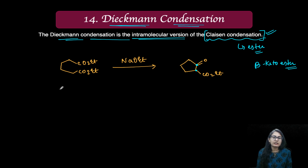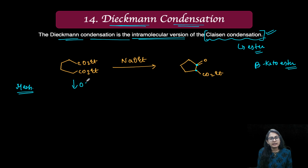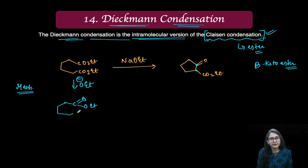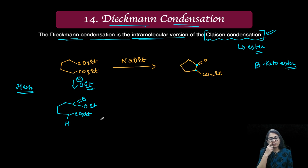Let's proceed and quickly see how the mechanism is going to be. If you have already drawn the mechanism for Claisen condensation, you would know that in the presence of this ester, the ethoxy group — what you can expect is you are going to remove this proton, let's say this is CO2Et, and that proton is taken up by the ethoxide via proton abstraction.